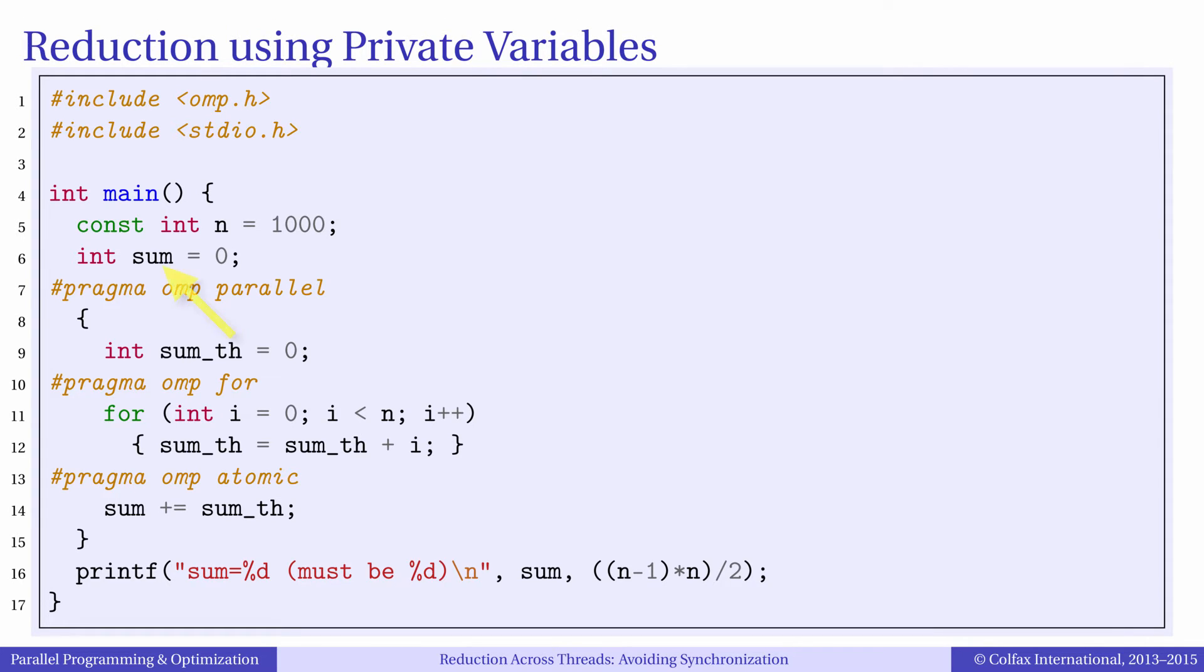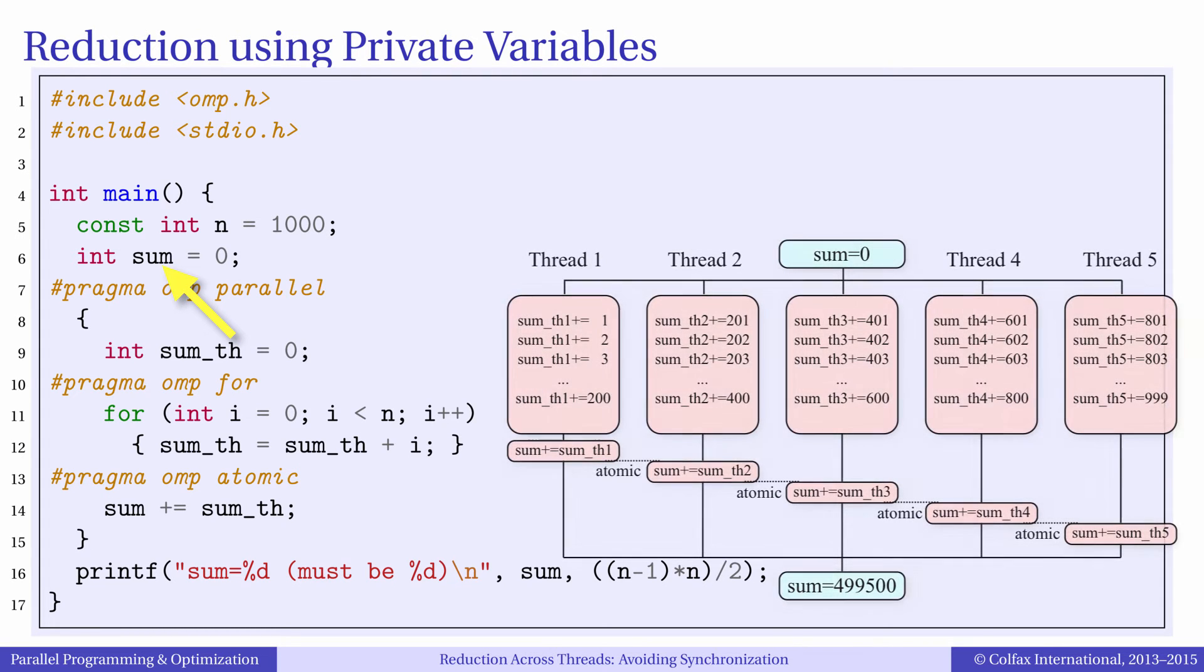In this program variable sum is shared between all threads. However, when we start the parallel region we create in each thread a private variable called sum_th and initialize it with 0.